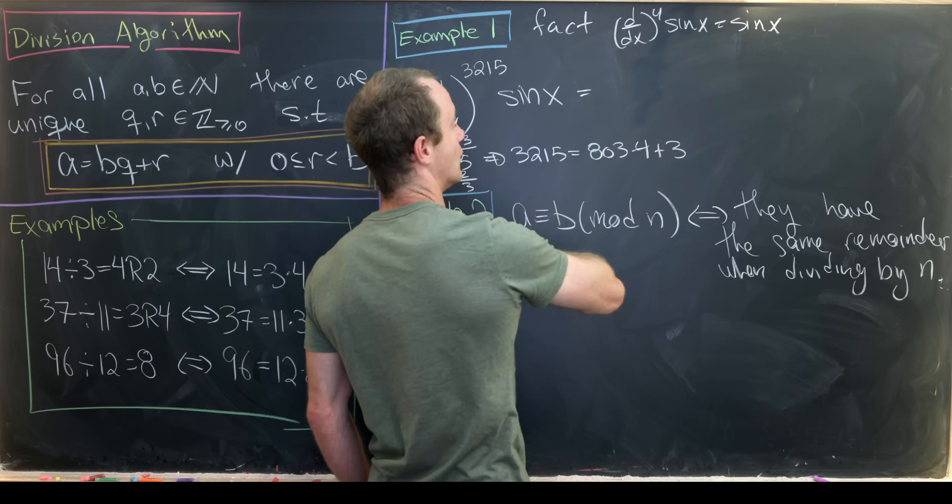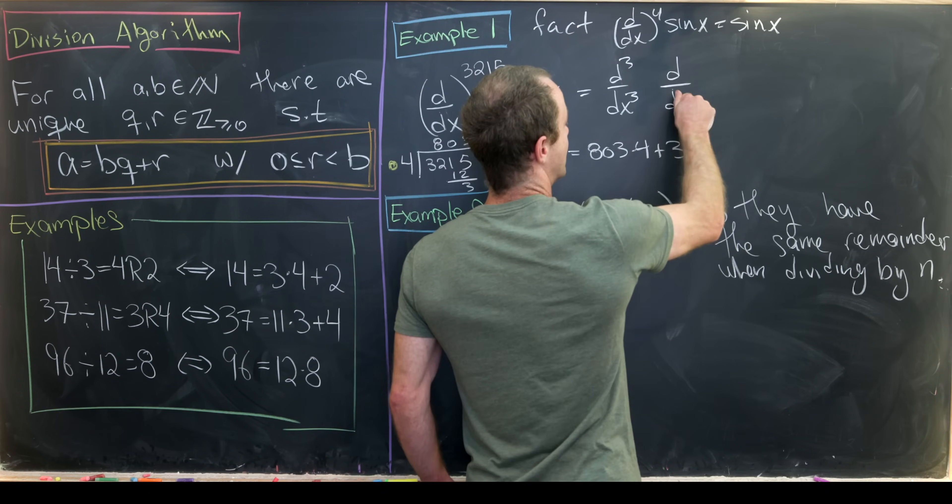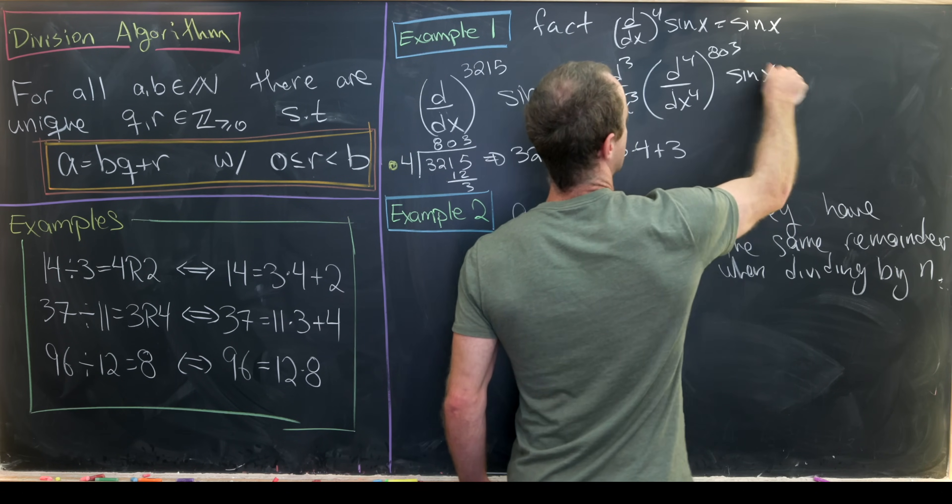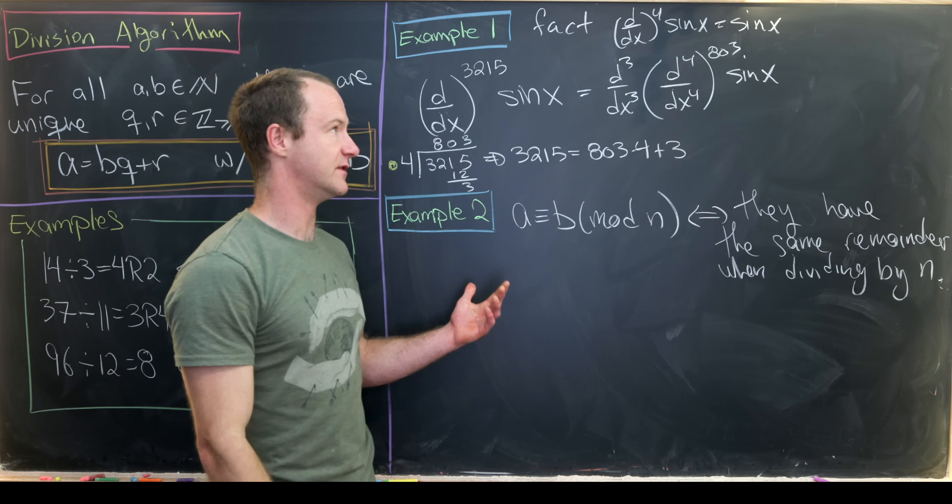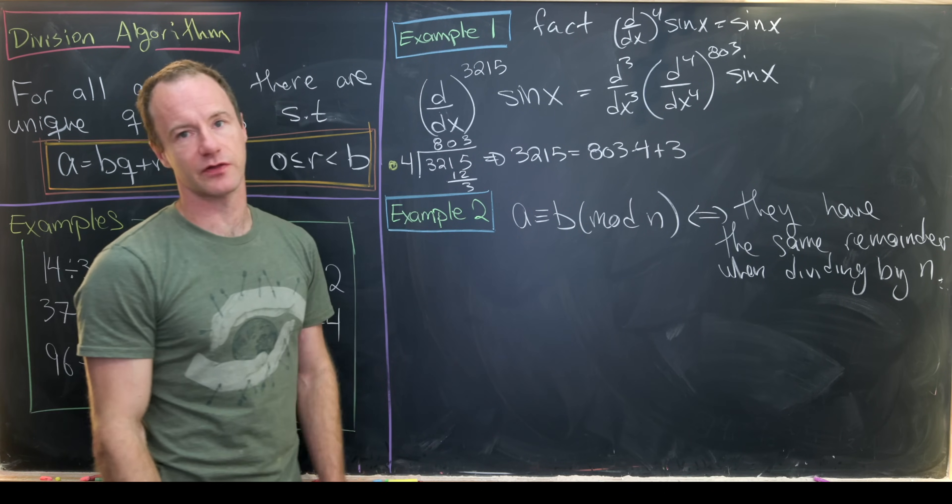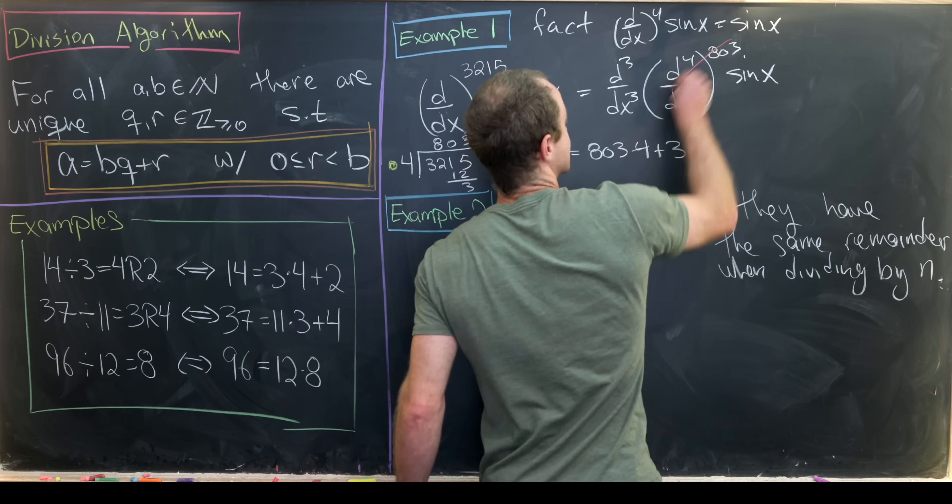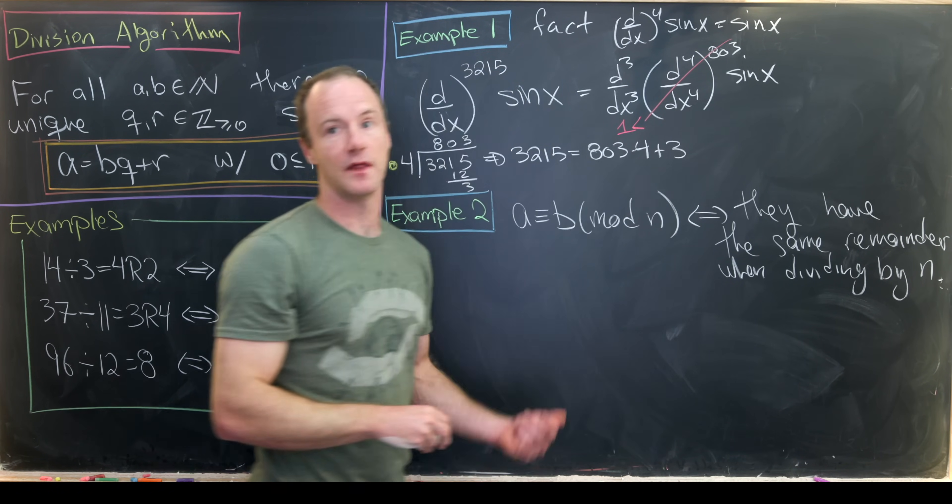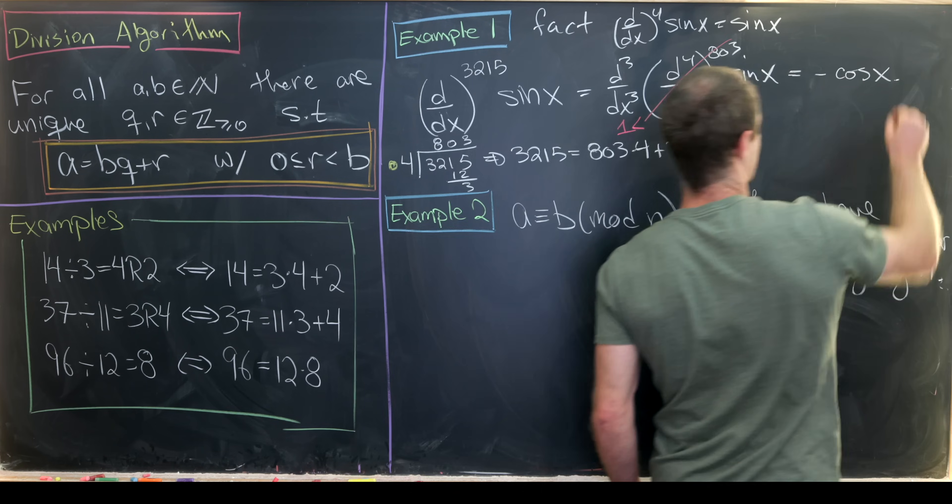But now that means that what we really have is the third derivative of the fourth derivative applied 803 times. But if the fourth derivative applied one time is just the sine function, then the fourth derivative applied two times is also the sine function, and the fourth derivative applied 803 times is also the sine function. So that means this guy right here has no effect—this is essentially the identity operator on the sine function. That leaves us with the third derivative of sine, which we previously said was minus cosine.